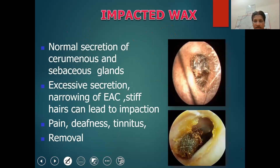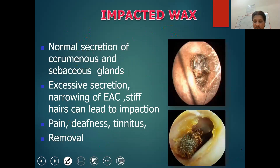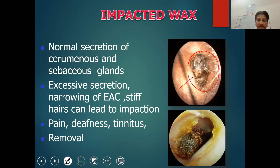These are some schematic diagrams as well as endoscopic sections of etiological factors of otalgia. This is a case of infected wax — you can see that the whole canal is blocked by a piece of wax. When the physician or the patient tries to manipulate it, it can cause a frictional injury to the canal wall, which can bleed and subsequently develop a secondary bacterial infection presenting as a painful picture.